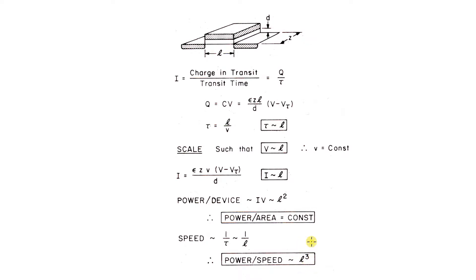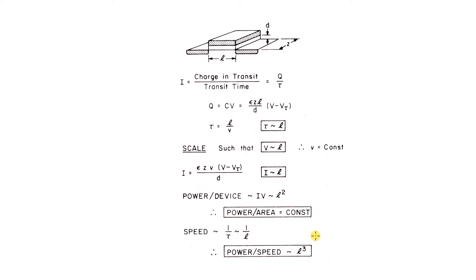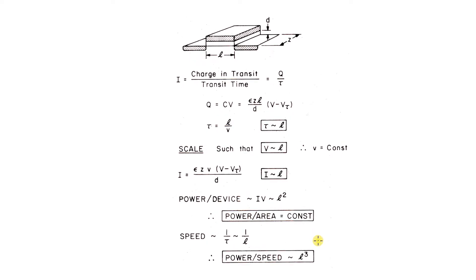The amazing thing is the performance — the speed of computing I get per unit power — goes like the cube. So if I scale the transistors down by a factor of 10, I get a thousand times more computing per unit power. I say, it can't be true. Murphy's law won't let you do anything that's that good. But that's what this argument gives.